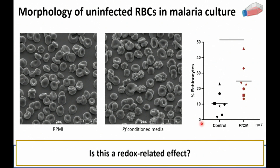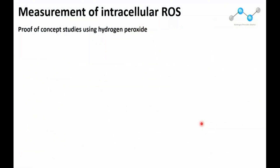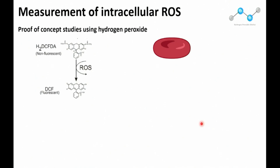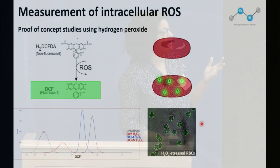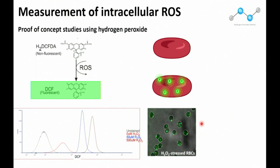We then wanted to know whether this was a redox-related effect, which could connect to what's being looked at in sickle cell disease. To look at whether it's a redox effect, we started with proof-of-concept studies using hydrogen peroxide. We used a reagent called H2DCFDA, which does not fluoresce in the absence of reactive oxygen species, but does fluoresce once there are reactive oxygen species — so you can measure intracellular ROS. When we looked at hydrogen peroxide-stressed red blood cells, as predicted, we saw an increase in intracellular ROS, measurable both by microscopy and flow cytometry.